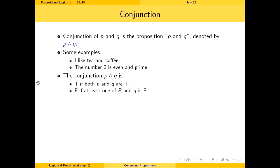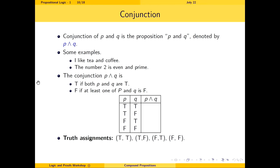The conjunction of P and Q is the proposition 'P and Q,' denoted P ∧ Q. Examples: 'I like tea and coffee,' 'The number two is even and prime.' The conjunction is true if both P and Q are true, and false if at least one is false. The truth table has four rows: true∧true = true, true∧false = false, false∧true = false, false∧false = false.